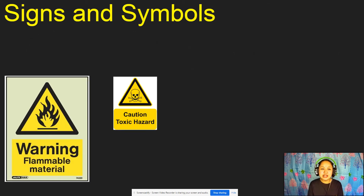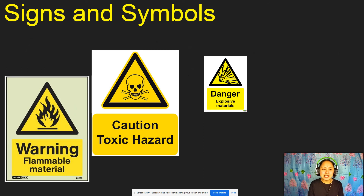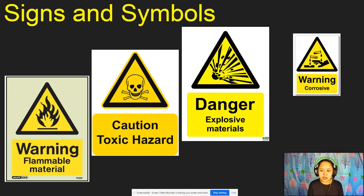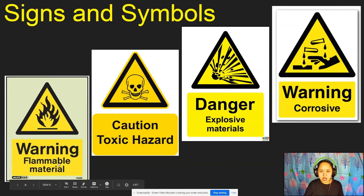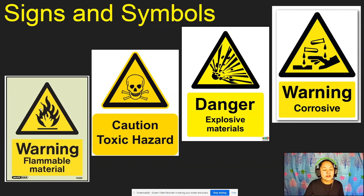Next, let's look at the different signs and symbols. We have a symbol for flammable materials — when you see a symbol that looks like a fire, that means it is flammable, meaning it can easily burn.